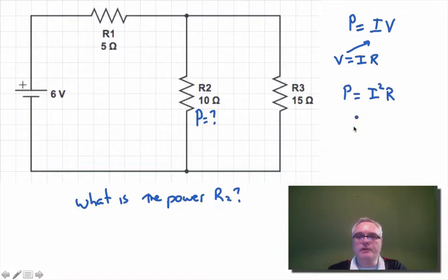I could also rearrange Ohm's law and get a third equation that I could use for calculating the power depending on if I knew the voltage. So really as long as I can find either the voltage or the current flowing through this resistor I can find the power in that resistor.